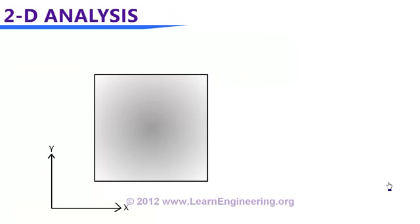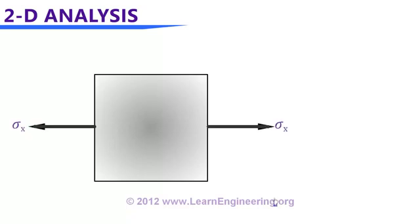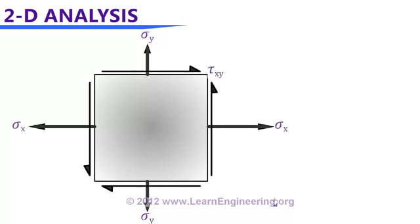In two-dimensional stress analysis, we have a two-dimensional object where we have to do stress analysis. The stresses acting on the boundary of this object are a normal stress along the x direction — sigma x — another normal stress along the y direction — sigma y — and finally shear stresses on the four planes of the body, tau xy. In a stress analysis, what you have to determine is the stress at any plane inside the body.